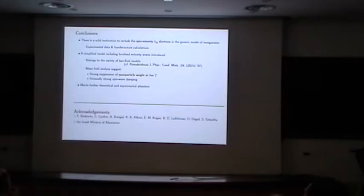These are basically my conclusions, that there is a solid motivation to include spin-minority T2g electrons in the generic model of the manganites. This is based on experimental data and band structure calculation. I showed you a maximally simplified model as I could basically get, which belongs to the general family of two-fluid descriptions of the manganites. Mean field analysis, however tentative, suggests that quasiparticle weight is strongly suppressed already at low T and decreases with temperature, and you have unusual spin wave damping. I suppose that this direction merits further theoretical and experimental attention. These are my acknowledgements, both for knowledge and for money. Thank you.